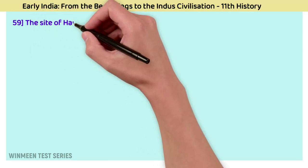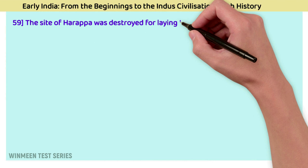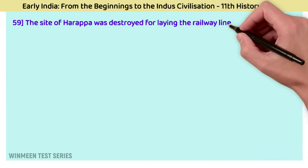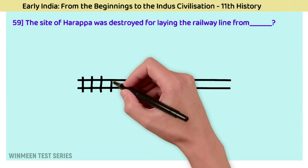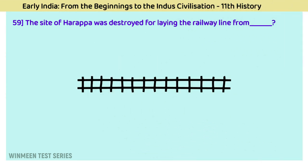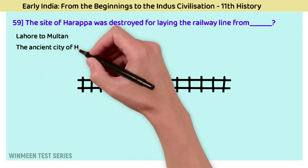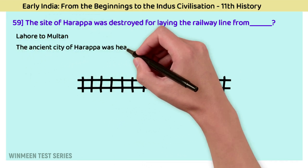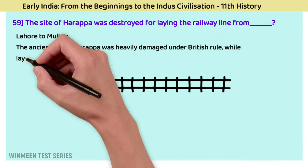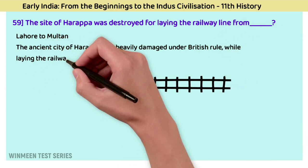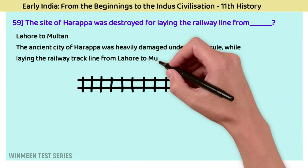Question 59: The site of Harappa was destroyed for laying the railway line from? The answer is Lahore to Multan. The ancient city of Harappa was heavily damaged during British rule while laying the railway track line from Lahore to Multan.